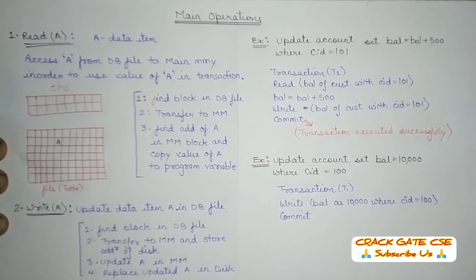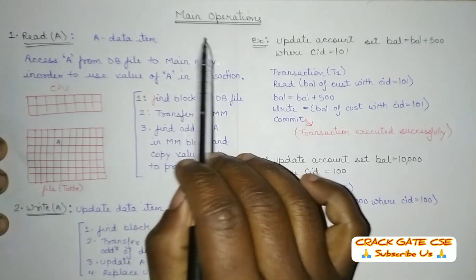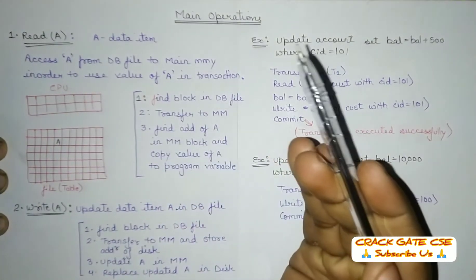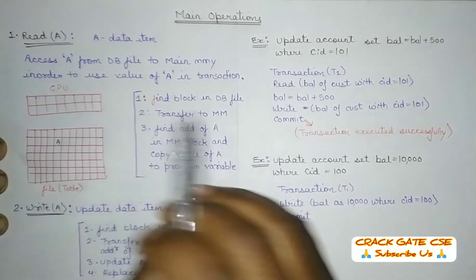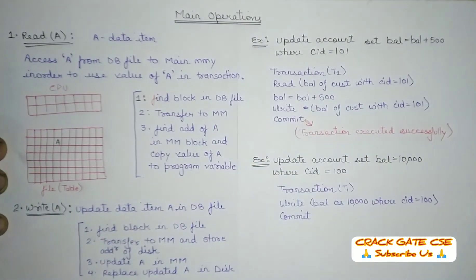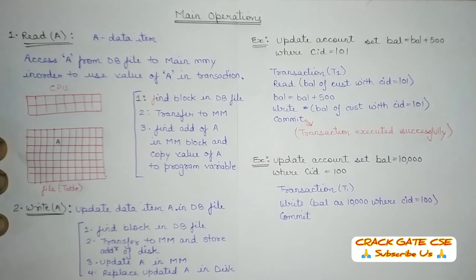Hello friends, welcome to CragGate CAC. In this series on databases, today we'll be understanding main operations in transaction and concurrency control. In the previous video, we discussed some basic terminologies like what is a transaction, what is concurrency control, and what is degree of concurrency. If you have not checked that video, please check it out, and if you are new to this channel, please subscribe for more lectures and preparation tips.